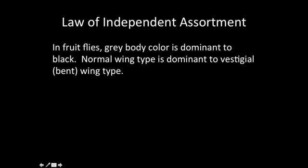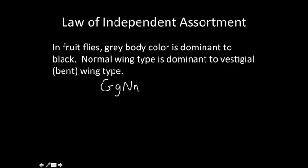We're going to use this as an example. In fruit flies, gray body color is dominant to black. Normal wing type is dominant to vestigial, which is bent wing type. We're going to have a heterozygous fly — heterozygous for these traits. Big G is for the gray body, little G for the black body, and it's heterozygous. Big N for normal wing type, little N for vestigial. This fly has a gray body with normal wing type, but they're heterozygous — they carry the recessive alleles.